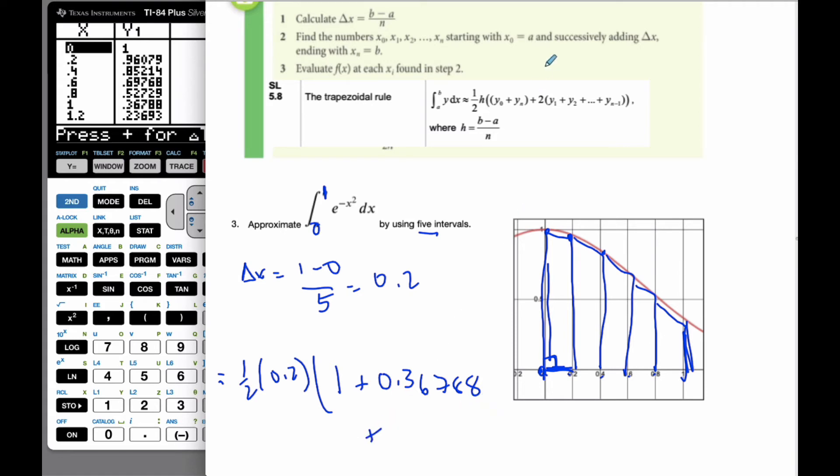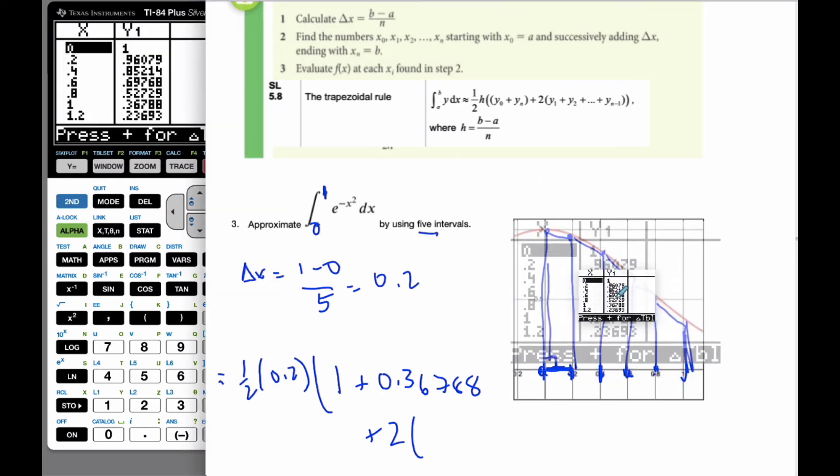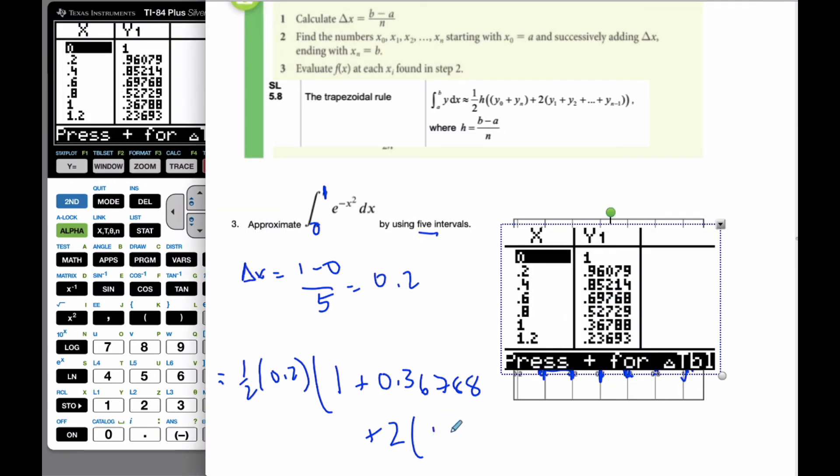Plus, and then I go two times, well, I want each of these values here. And so if I bring my screen over, I can find them, and so I can see it's going to be 0.96, and I'm not going to write all the decimal places, plus 0.85, plus 0.698. And the last one is going to be plus 0.527.